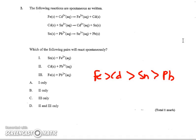So then looking at the pairs, number one, tin metal cannot take ions from iron because iron is more reactive, so one is not an option. Cadmium can give electrons to lead, so that will occur, and iron can give electrons to lead, so that will occur. So D would be my correct choice.